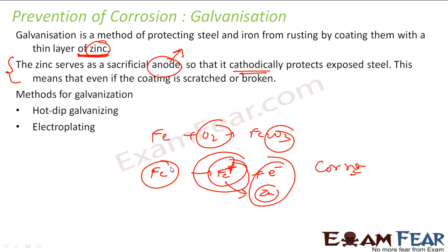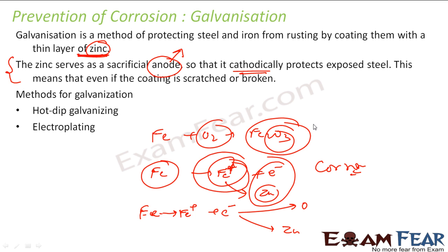Iron will lose electrons anyway. If those electrons are taken by oxygen, it rusts and forms Fe₂O₃. But if zinc is present, zinc acts as the anode and takes those extra electrons instead. If zinc takes the electrons, oxygen cannot take them, meaning Fe₂O₃ is not formed — and that is how zinc prevents rusting. This is the sacrificial anode concept: zinc takes the extra electrons and does not allow oxygen to cause rusting.